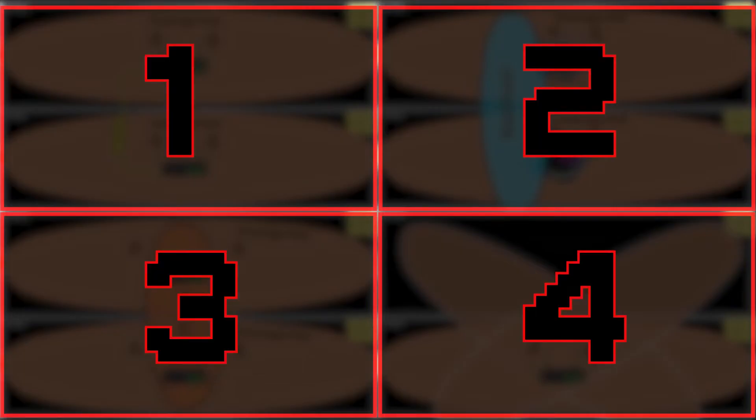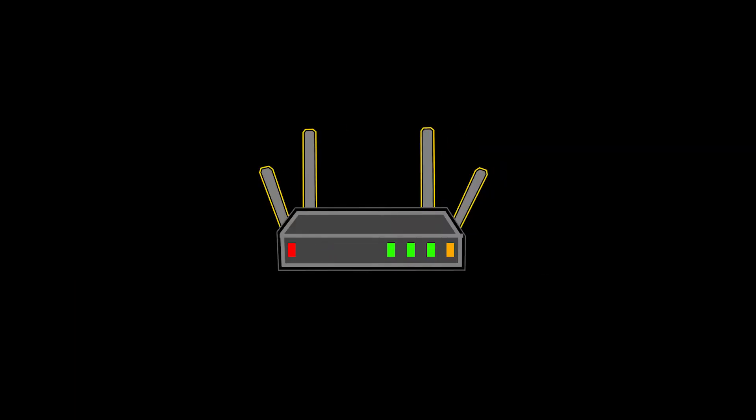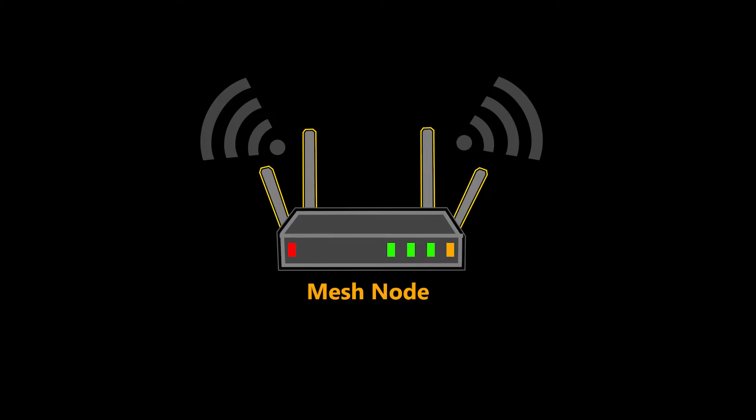I'm going to try to explain this using four different scenarios. Please note that while these scenarios cover a wide range of situations, they may not encompass every possible scenario, but hopefully they should provide enough information for you to understand what to do even if you have a slightly different setup. For simplicity I will refer to the devices that broadcast wireless networks as access points — in reality they could be access points, wireless routers, repeaters, or even mesh nodes.